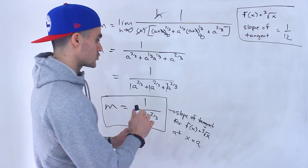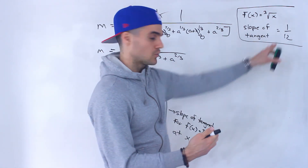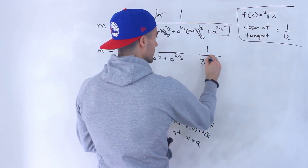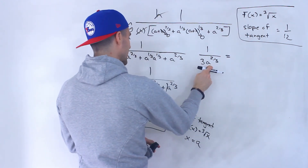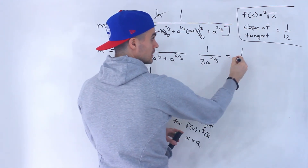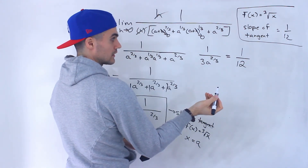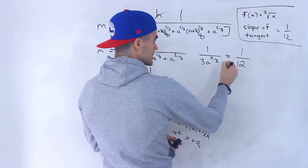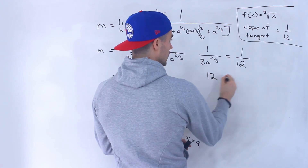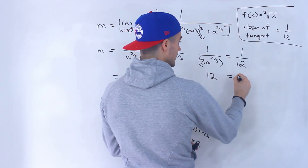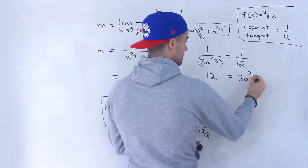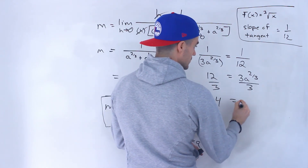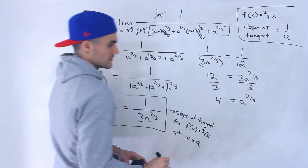Remember what we're trying to do: find the coordinate where the slope of the tangent is 1 over 12. So we take our expression and set it equal to 1 over 12 — at what a value does the slope equal 1/12? We can cross multiply: 12 times 1 equals 12, and that term times the other gives us 3a to the power of 2/3 equals 12. Dividing both sides by 3, we get a to the power of 2/3 equals 4.